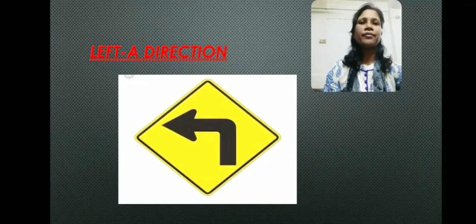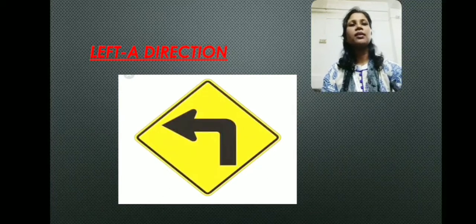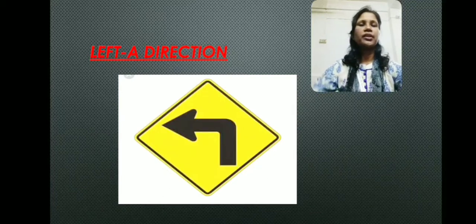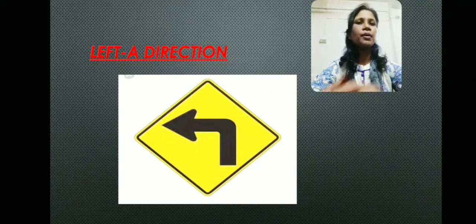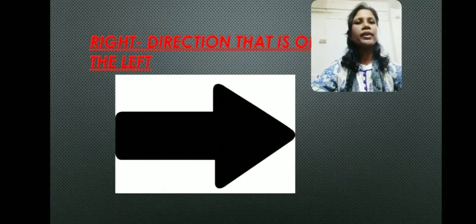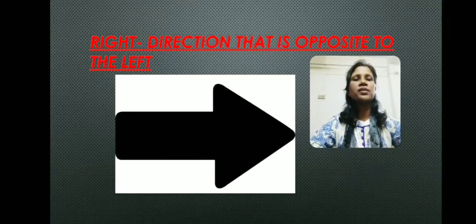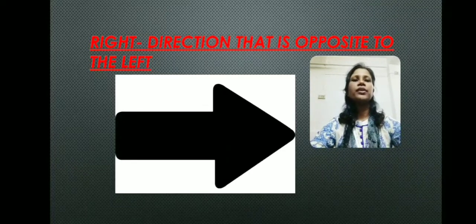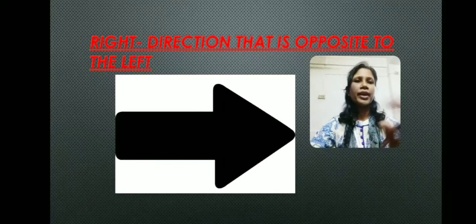The next word is 'left' — L-E-F-T. Left means a direction. You can see this is the left direction symbol. The next one is 'right.' Right means also a direction — it is the direction that is opposite to left. You can see this is the symbol of the right direction.